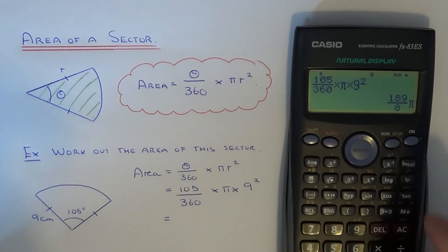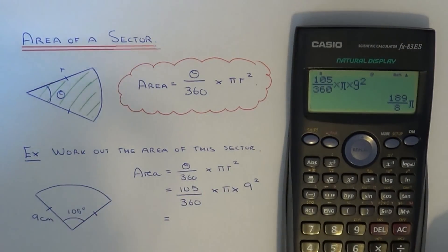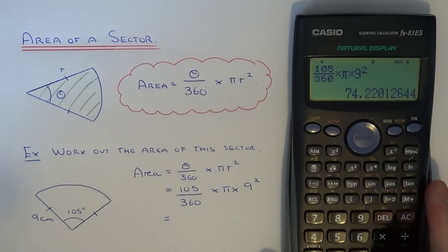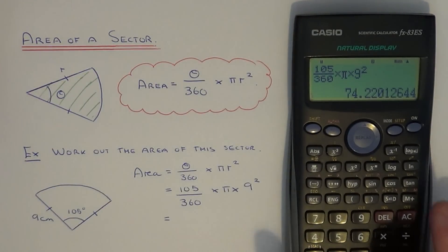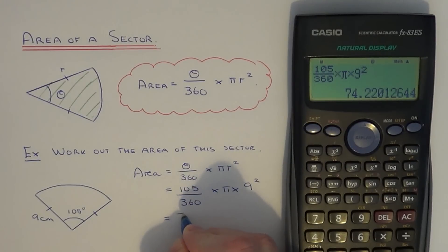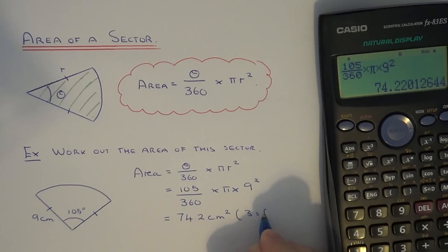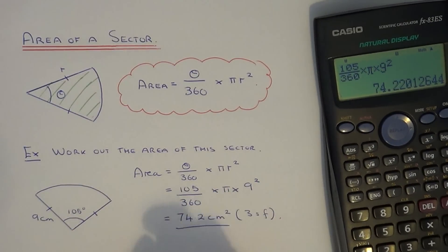That's our exact answer there, 189 over 8 pi. If we just change that to a decimal that will be our final answer. Let's round it off to three significant figures, so it's 74.2 centimeters squared. That's the three sig figs. Thanks for watching.